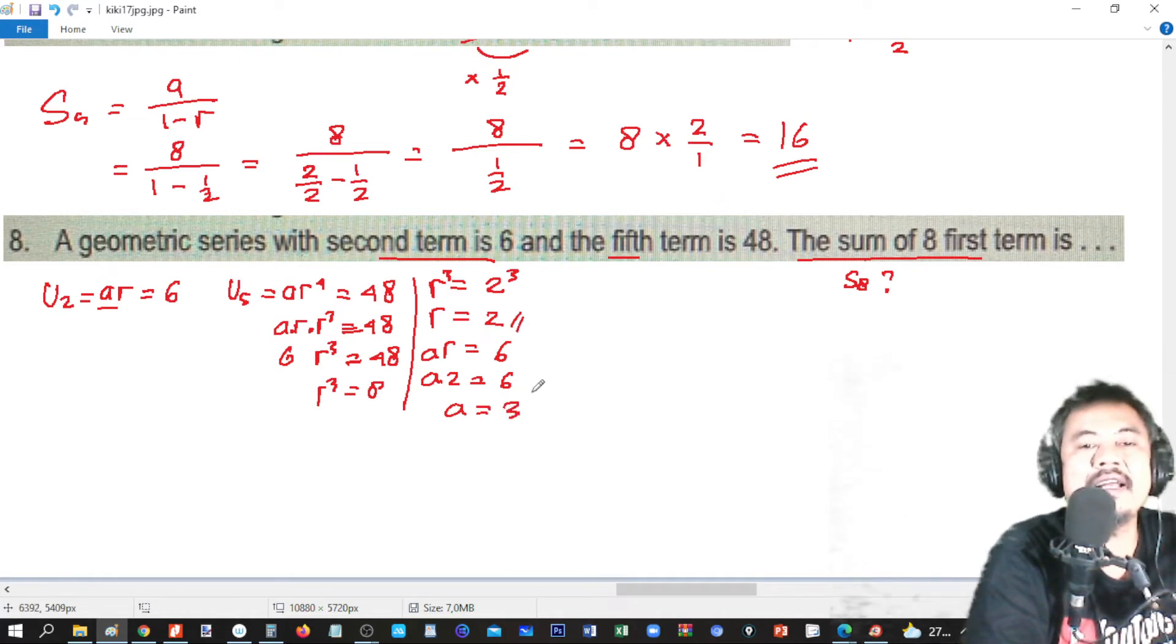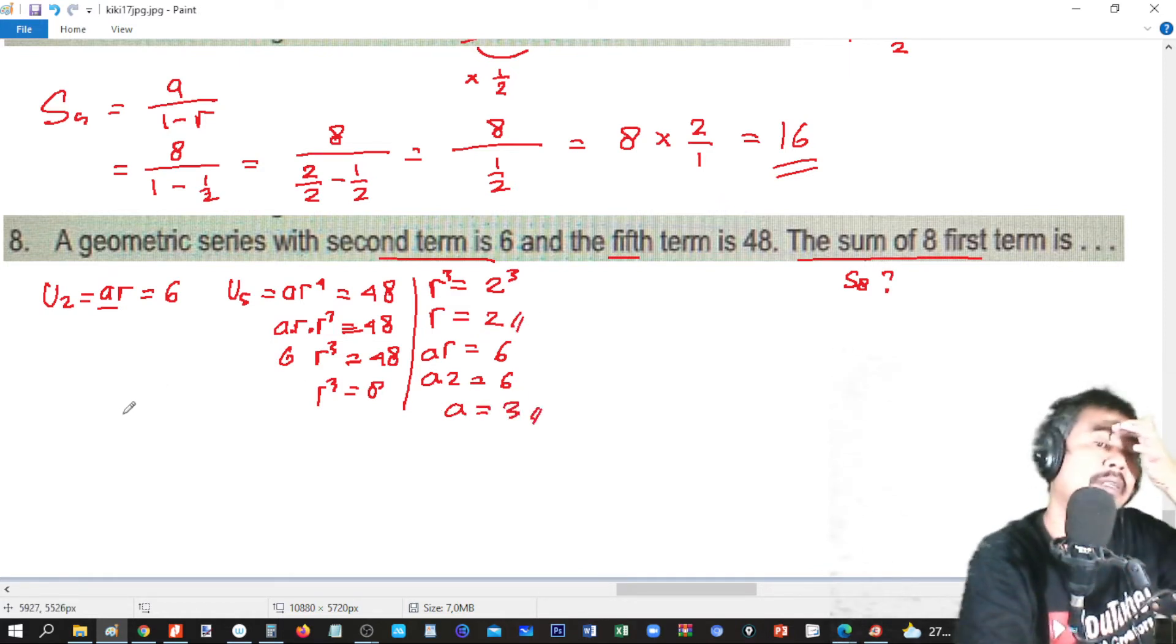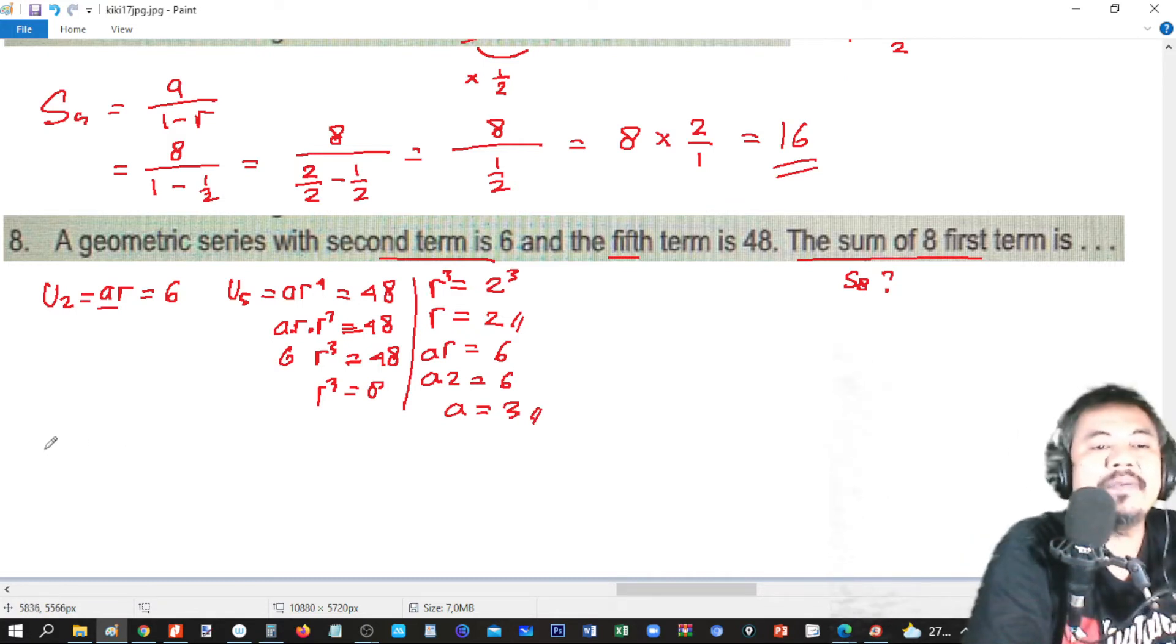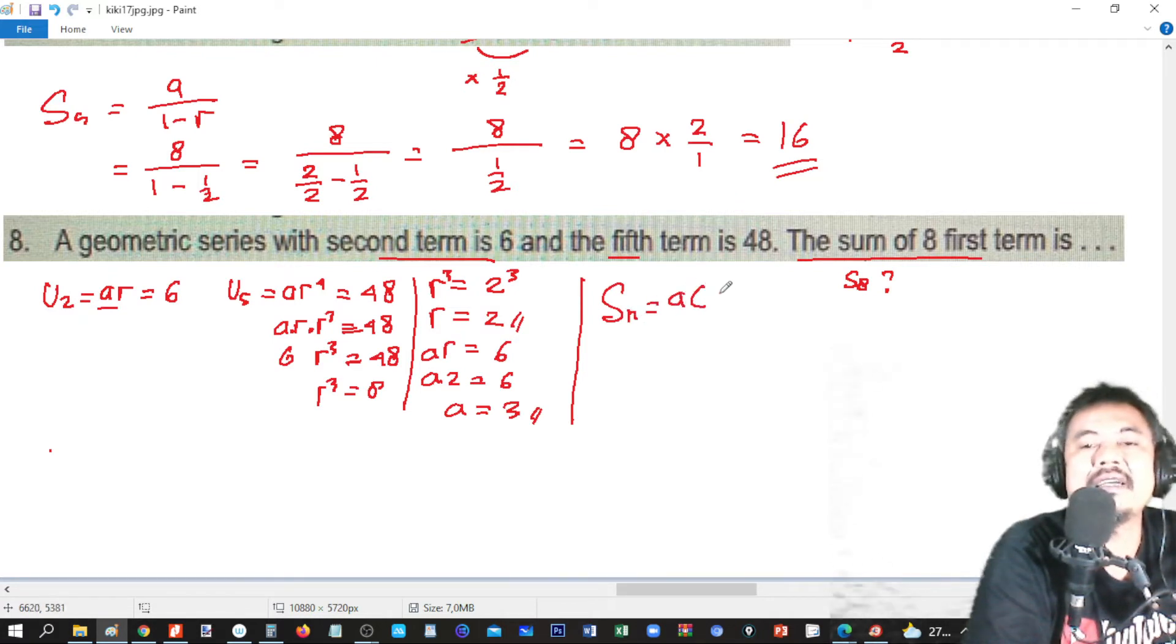We have R and A, and then we have SN. SN is equal to A times R to the power N minus 1, over R minus 1. So we have S8.